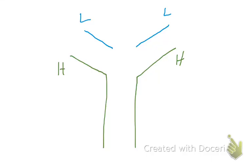Now I want to talk about antibody structure and antibody diversity again. Here I've drawn an antibody — this could also be called an immunoglobulin. I've drawn it in the soluble version, but this could easily be a version that's embedded in the plasma membrane of a B cell and therefore be a B cell receptor.